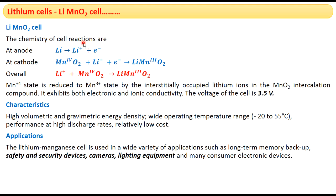The cell reactions occurring here are simple. The anode is lithium, which undergoes oxidation: Li → Li⁺ + e⁻. One electron is produced at the anode and is transported to the cathode through the external load applied. The Li⁺ ion passes through the electrolyte and reaches the cathode, whereas the electron takes a different path and reaches the cathode through the external load.